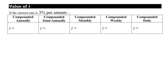Compounded annually means once per year, so the interest rate stays the same — 3% per year is still 0.03. If the interest is compounded semi-annually, that means two times per year. You're basically cutting the year in half, so you also cut the interest rate in half. So I in the compound interest formula would be 0.03 divided by 2.